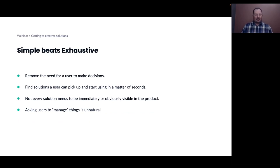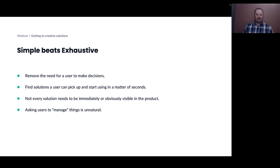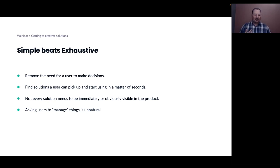Another key theme is: simple beats exhaustive. Provide one general mode with no alternate design — no need for skins or anything like that. You should be able to offer one version of your product and offer it really well. Make your features stupid simple. Find a solution that a user can pick up and start using in a matter of seconds. Take away explanations and focus on ensuring the feature is clear enough that it doesn't need explaining. Not every solution needs to be obviously or immediately visible in the product — it should be where the user needs it, when they need it. And remember that asking users to manage things is unnatural. For most users, management is a chore. Contacts, calendars — great examples of things that should just automatically update and be magical and easy to use.